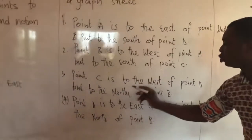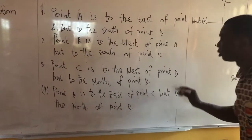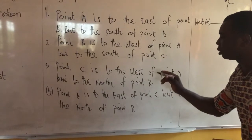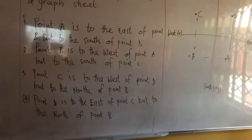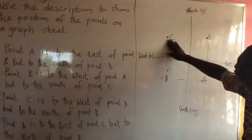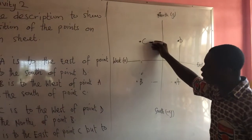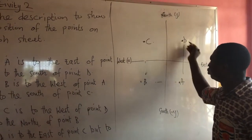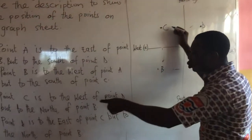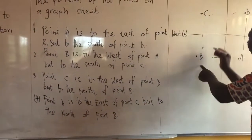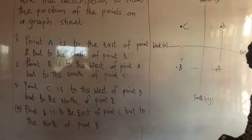Let's look at number three. Point C is to the west of point D, but to the north of point B. So, you see point C — this point C is to the west of point D, to the west, so it is there. But to the north of point B — it is to the north, so it is there at the top. So, our point C is also correct here.